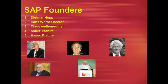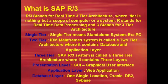First, we have a single-tier — the standalone system, for example a PC or personal computer. Next, two-tier architecture: IBM mainframe system is called two-tier architecture, containing two layers — database layer and application layer.